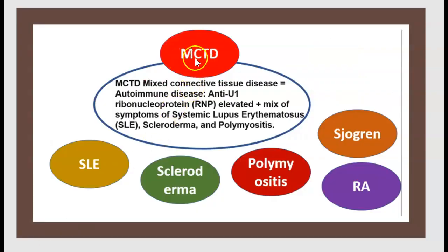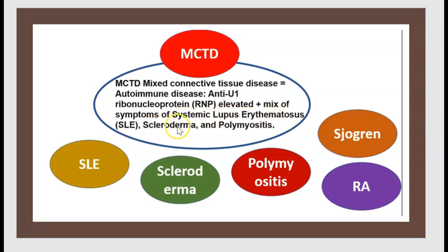Mixed Connective Tissue Disease (MCTD) is an intersection of many connective tissue diseases, including SLE, scleroderma, polymyositis, rheumatoid arthritis, and Sjögren's syndrome. MCTD is an autoimmune disease characterized by elevated anti-U1-ribonucleoprotein (RNP) antibody, plus a mix of symptoms from systemic lupus erythematosus, scleroderma, and polymyositis.